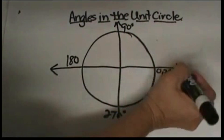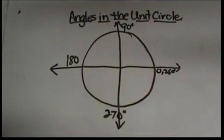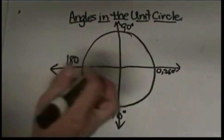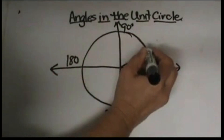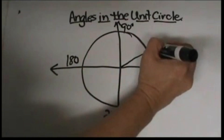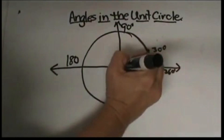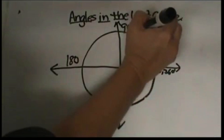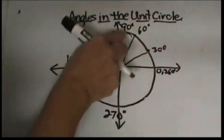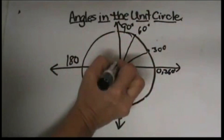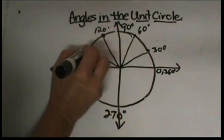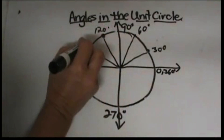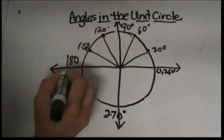Now there are two families involved in the unit circle. The first one is our 30-degree family, so our angles are going to increase in 30-degree increments. The first one is 30 degrees, the second one is 60 degrees, then we hit 90 degrees. The next one over would be 120 degrees, then 150 degrees, and then 180 degrees.